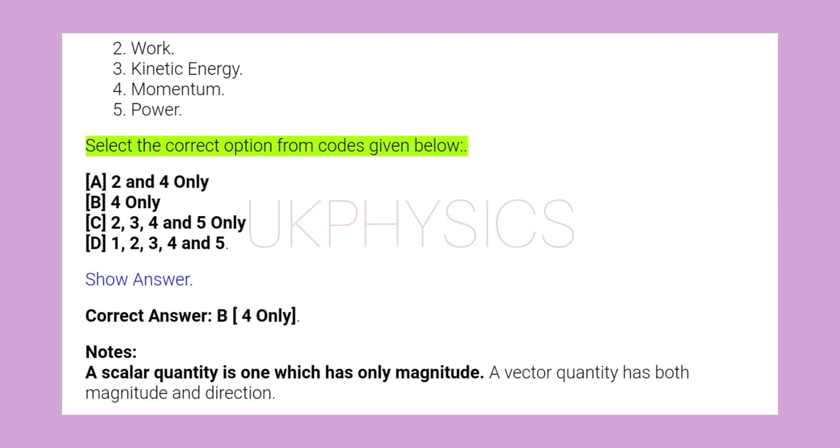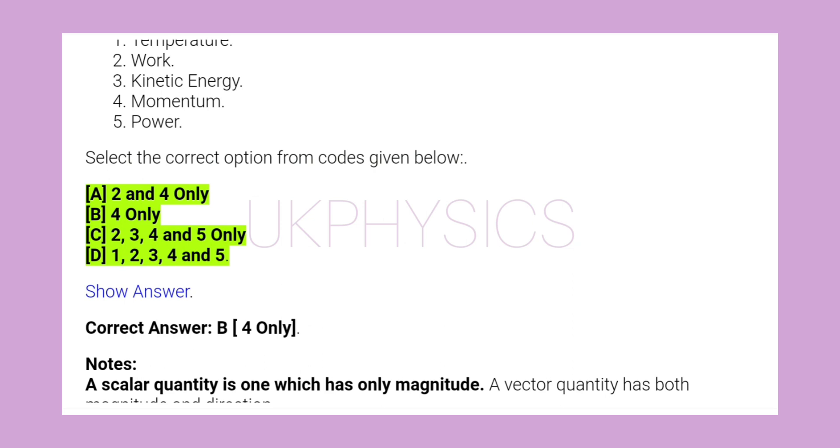Select the correct option from codes given below. A. 2 and 4 only, B. 4 only, C. 2, 3, 4 and 5 only, D. 1, 2, 3, 4 and 5.